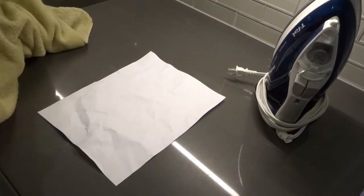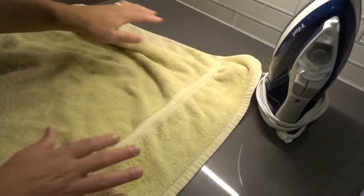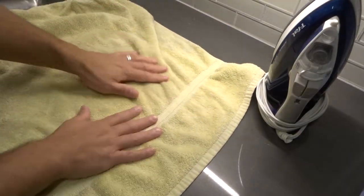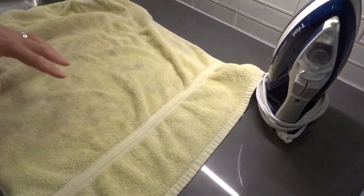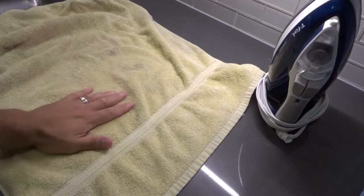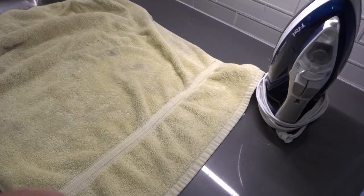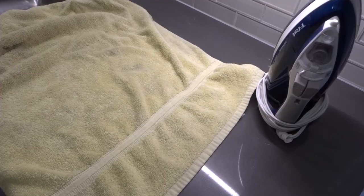You want to get a towel and put the towel over the paper, just like that, and know where your paper is underneath the towel. If it's a really thin towel you can fold it over twice. If it's just a regular thickness towel like this, just place it down like that.